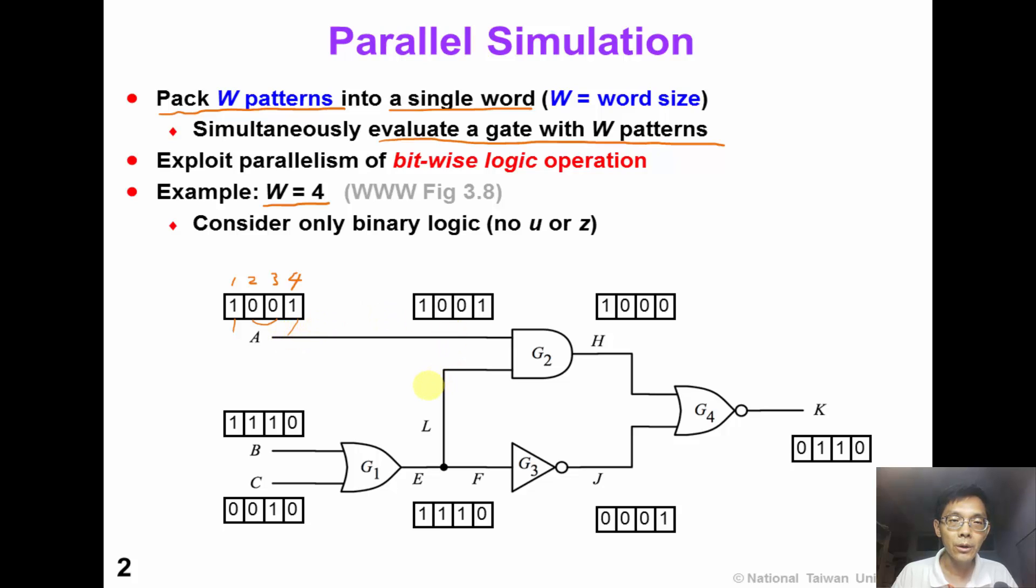If we perform a bitwise operation, we can simultaneously obtain the result of a gate output. For gate G1, we can perform a bitwise OR operation and the output of this OR gate is 1, 1, 1, 0. And we perform a bitwise AND operation, so the gate output of G2 is 1, 0, 0, 0.